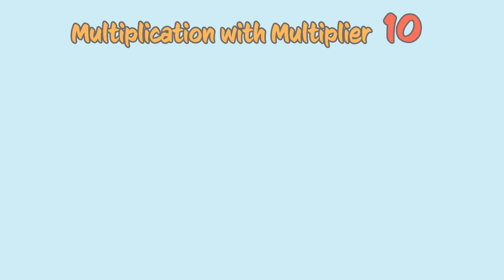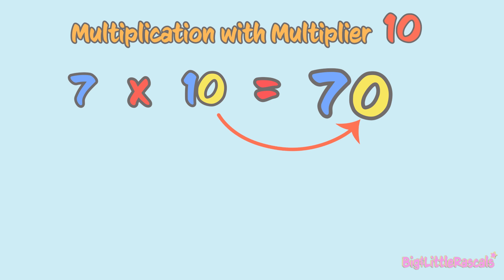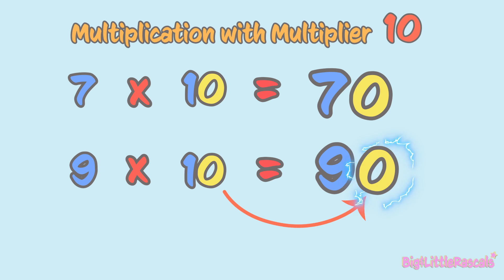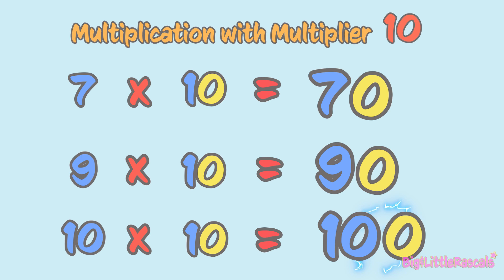Now, let's jump to multiplication with multiplier 10. The easy one. When you multiply a number with 10, you need to add 1 zero at the end of that number. Let's see this example: 7 multiplied by 10. First, write number 7. Then, add 0 at the back, which is now equal to 70. Next, 9 times 10 equals 90, and 10 times 10 equals 100. Got it? Well done!